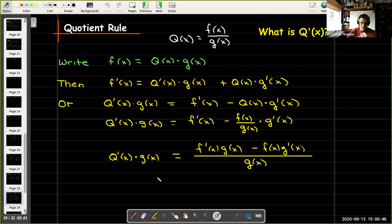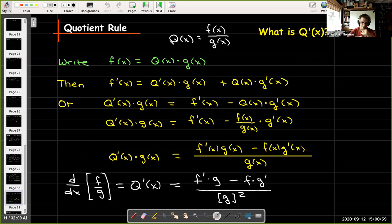And now the only thing that's left is to solve for Q'(x). So I'll multiply both sides by 1 over g(x). And I find that the derivative of f over g is the fraction f' times g minus f times g' all over g². And that's our quotient rule.